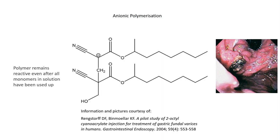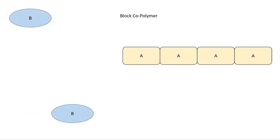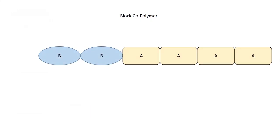As the anionic chain doesn't terminate unless an electrophile is added or an impurity is present, it's possible to make polymers consisting of blocks of different monomers. When all of monomer A has been used up in the reaction, monomer B can be added, and the reaction will continue as the carbanions react with new monomers. The result is polymers known as block copolymers.